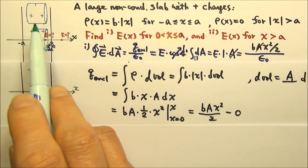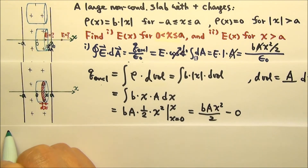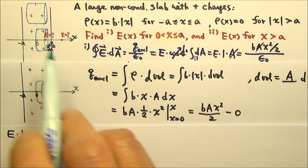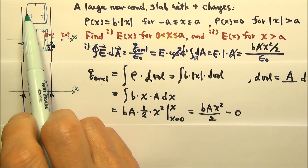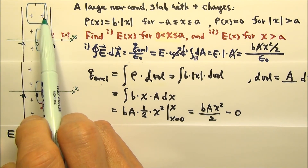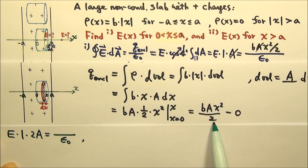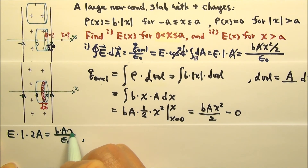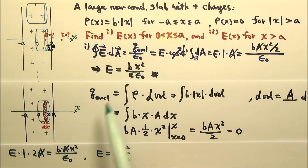Had we chosen the longer cylinder, we would have non-zero fluxes through both ends. So the flux part would equal E times 1 times 2 ends, giving twice the cross-sectional area, and that equals Q enclosed over epsilon naught. For Q enclosed, because it's symmetric left and right, the longer cylinder encloses twice the charge as one side, which is b times A times x squared. Again, the arbitrary cross-sectional area cancels, and we get E equals bx squared over 2 epsilon naught. When we use two different methods correctly, we should expect to get exactly the same answer.